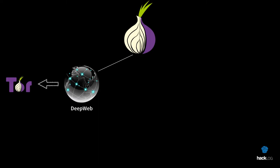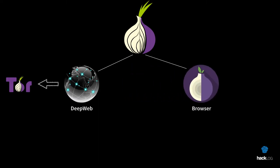The TOR network is perhaps the most famous tool to access the DeepWeb — or more precisely, to access the DeepWeb of TOR. Without it, our browser would not be able to resolve domains with the .onion extension, meaning those sites served across a network of servers and computers connected to TOR.